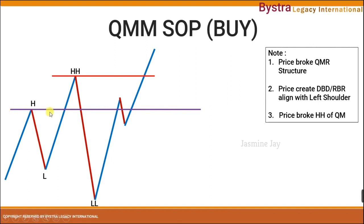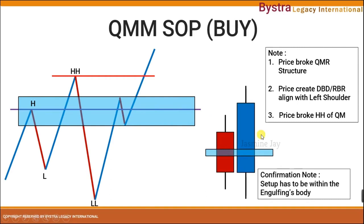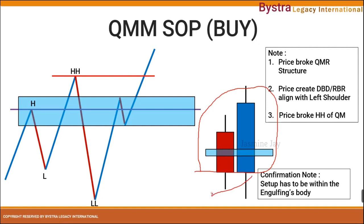First, always mark the horizontal line on the left shoulder, aligned with the rally base rally, and mark the zone. On the base of the rally base rally, mark the whole zone of the body of the base, and make sure the entry point is aligned with the rally base rally — this is where we set our pending order. Confirmation on the higher time frame is very crucial. If the setup is in the body of the engulfing candle, it is a low-risk setup. If the setup is at the weak area — the wick side — it is considered high-risk and not worth taking. But if the setup is somewhere around the lower area of the zone, it is still fine, as long as it is above that zone.